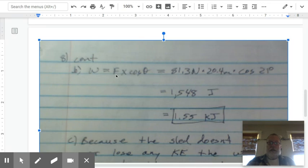And the force is the tension, which we just calculated to be 81.3. X is 20.4 meters, and the angle is 21 degrees. So we end up with 1,548 joules. The book wanted the answer in kilojoules, so I just rounded it to 1.55 kilojoules.